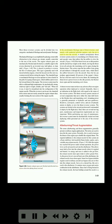In the aerodynamic blockage type of thrust reverser, used mainly with unducted turbofan engines, only fan air is used to slow the aircraft. A modern aerodynamic thrust reverser system consists of a translating cowl, blocker doors, and cascade vanes that redirect the fan airflow to slow the aircraft. If the thrust levers are at idle position and the aircraft has weight on the wheels, moving the thrust levers aft activates the translating cowl to open, closing the blocker doors. This action stops the fan airflow from going aft and redirects it through the cascade vanes, which direct the airflow forward to slow the aircraft. Since the fan can produce approximately 80% of the engine's thrust, it is the best source for reverse thrust. By returning the thrust levers to the idle position, the blocker doors open and the translating cowl closes.